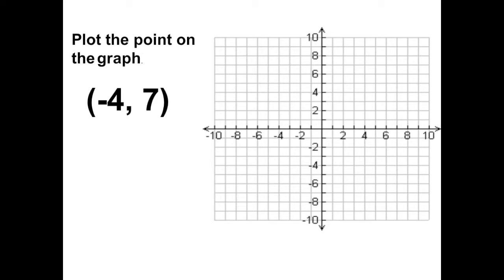Plot the point on the graph. Negative 4 is our x-coordinate. 7 is our y-coordinate. The horizontal line is our x-axis. The vertical line is our y-axis.